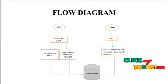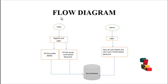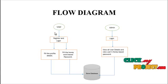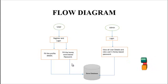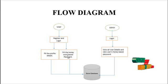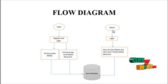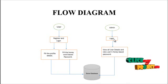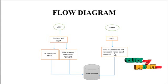This is our flow diagram. The flow has a user module and an admin module. First, the user registers all details, then gets a username and password, fills in profile details, and then updates HoneyWord-based passwords which are stored in the database. The admin module has its own username and password to log in.